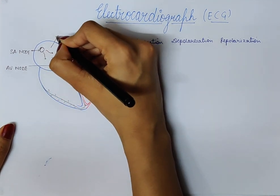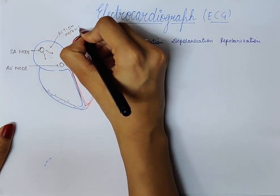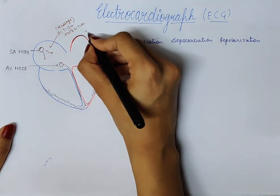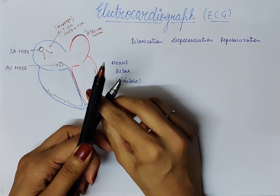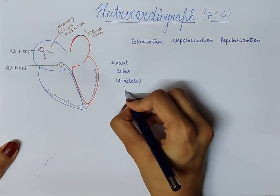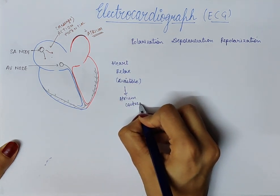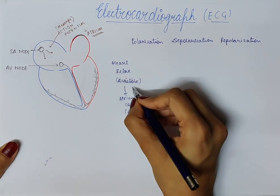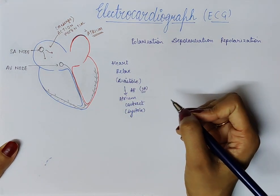That message is in the form of action potential. The SA node gives this message to the atrium — it contains the instruction for the atrium to go into contraction. Due to this, the atrium contracts, meaning it undergoes systole, because of the action potential generated by the SA node.